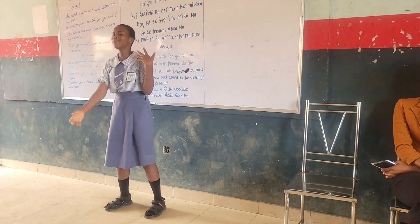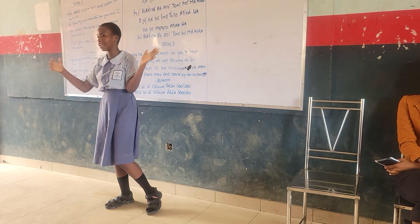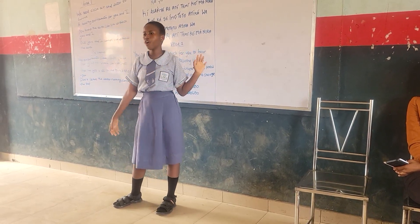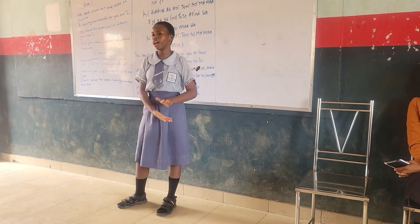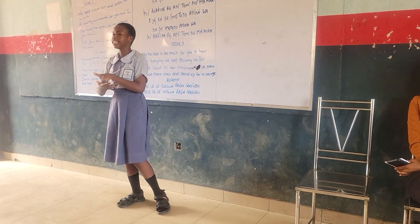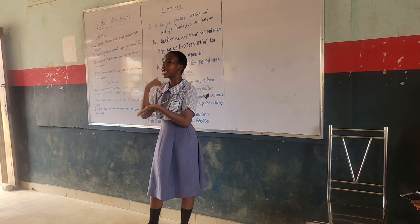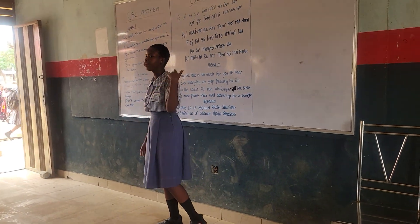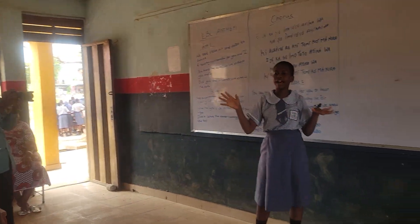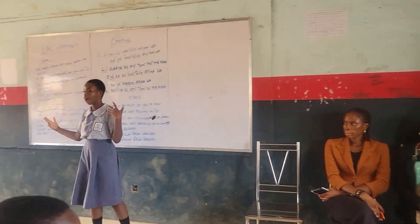Crops and livestock are generally attacked by a wide variety of pests. Although crops and livestock have their own defense methods against these pests, these defense methods are being broken down day by day because of the huge impact that pests have on them.